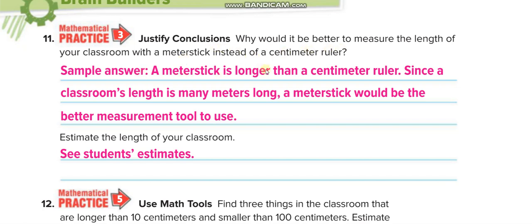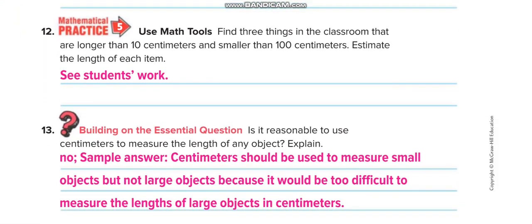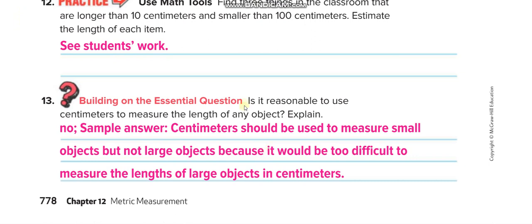Why would it be better to measure the length of your classroom with a meter stick instead of a centimeter ruler? Because the meter stick is longer and the classroom is long — using centimeters would take too much time. Also, it is reasonable to use centimeters only to measure small objects, not large objects, since centimeter is a small unit.